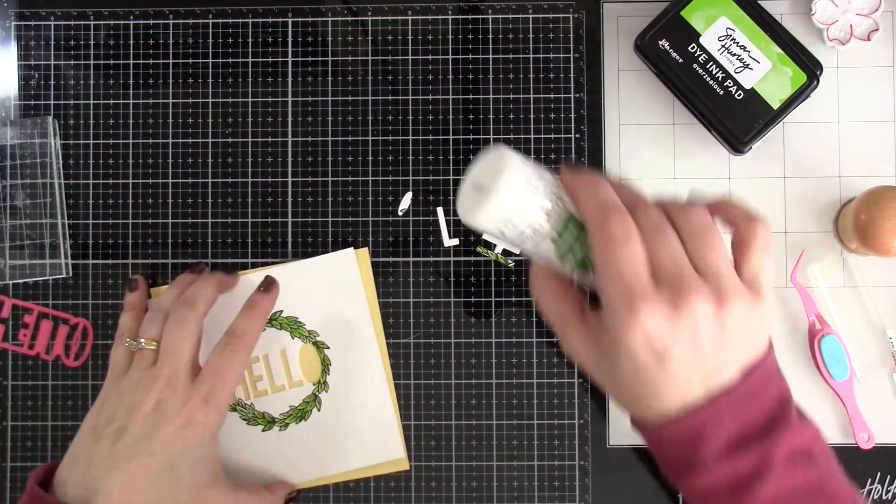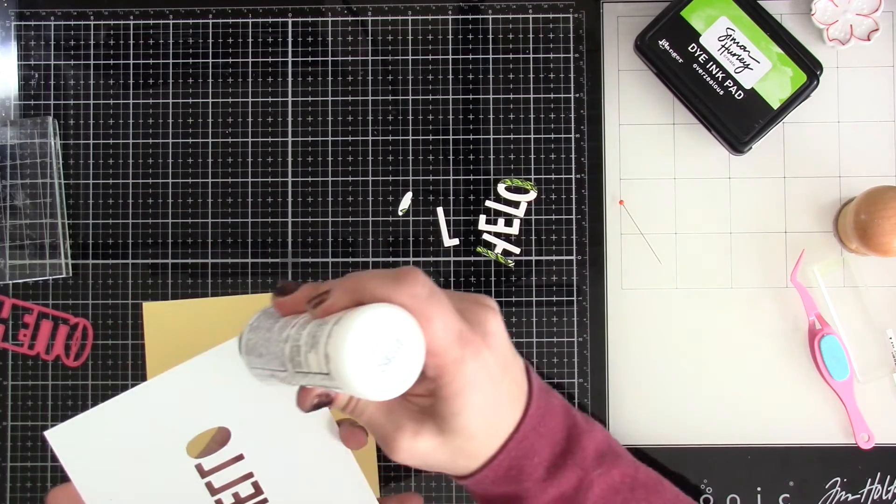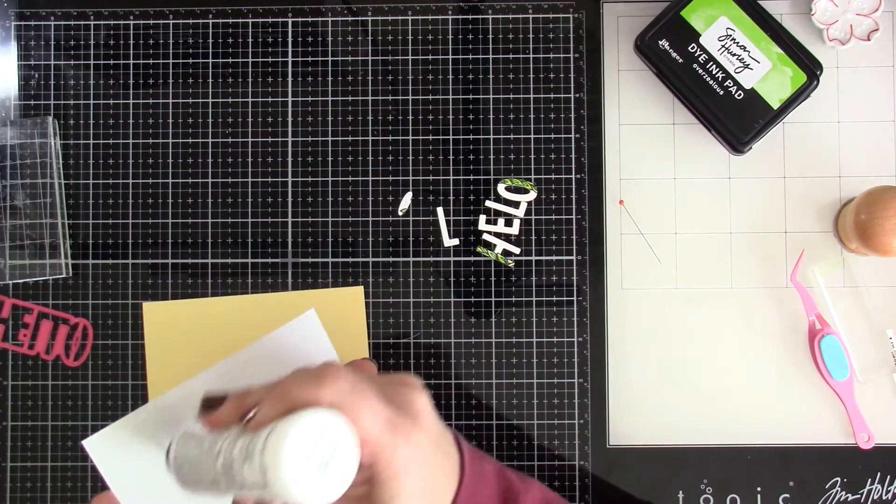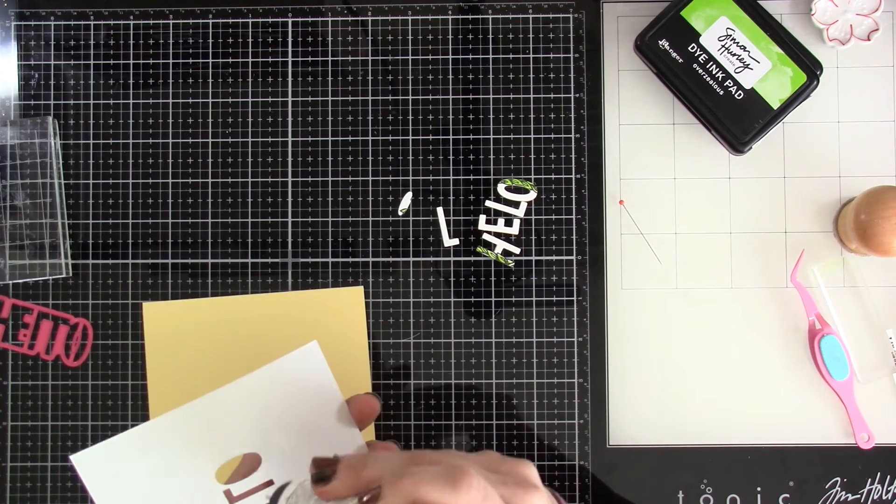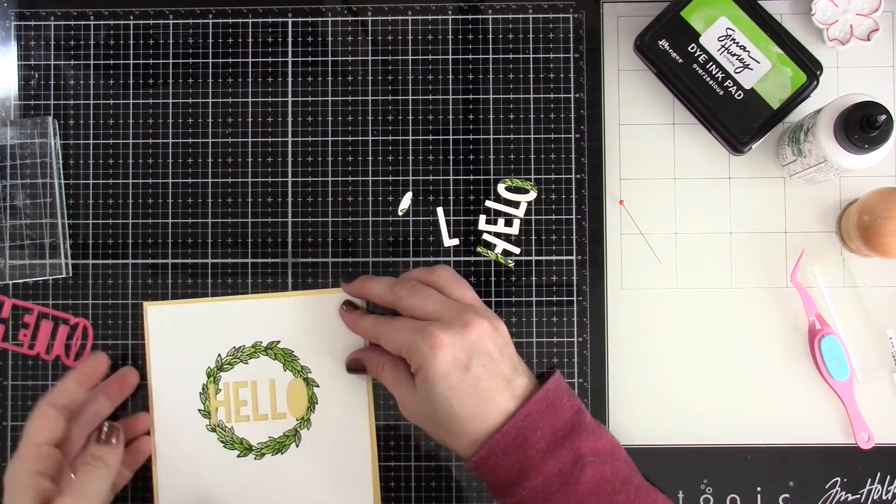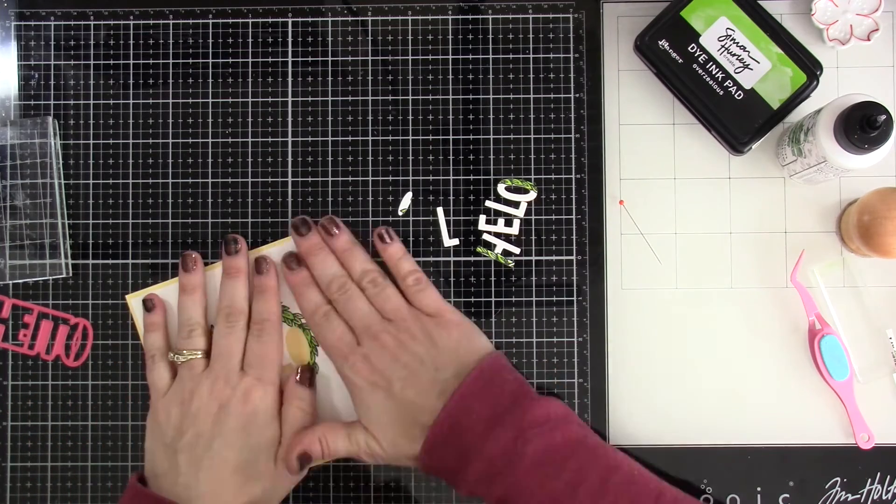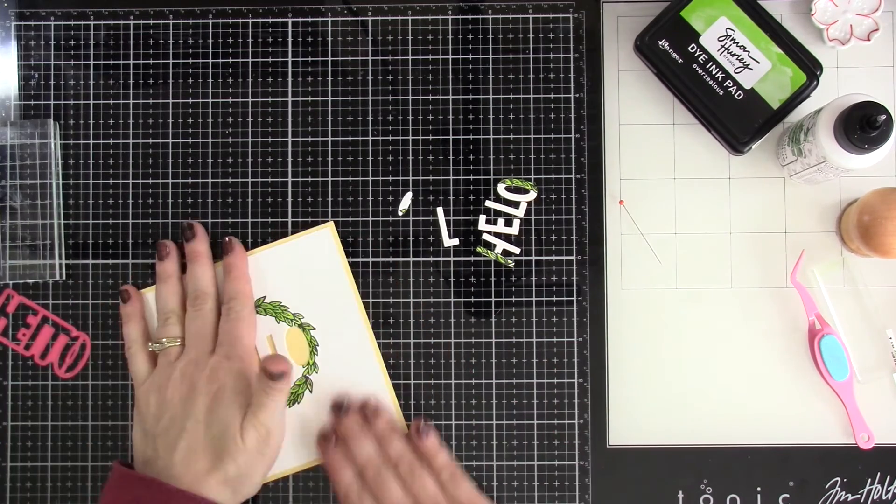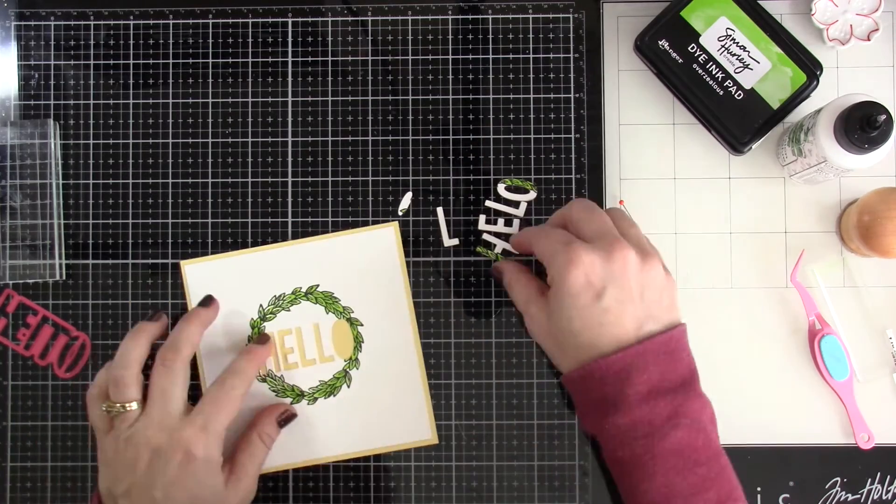My card base is some yellow cardstock that came in the kit that measured five and a half inches by 11 inches, scored at five and a half inches. So it's a square card. And then we're going to just tack that down with that same liquid glue that we've been using.